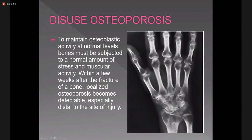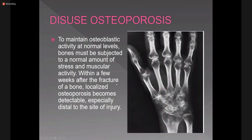There is a condition called disuse osteoporosis, seen when there is no muscular activity after a fracture. It is seen a few weeks after the fracture and leads to focal osteoporosis. There is decreased bone density adjacent to the joints, called periarticular osteopenia or juxtaarticular osteopenia. It is seen distal to the site of injury. This picture can also be seen in other types of arthritis, but if it is seen after fracture, it is called disuse osteoporosis.